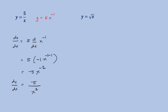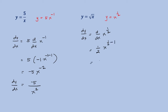Another example: y equal to the square root of x. To apply the power rule, we write this as y equal to x raised to 1 half. Getting the derivative of x raised to 1 half, by the power rule, that would be 1 half times x raised to 1 half minus 1, giving us 1 half times x raised to negative 1 half. Simplifying, we write this as 1 half times 1 over x raised to 1 half, which is 1 over 2 times the square root of x.